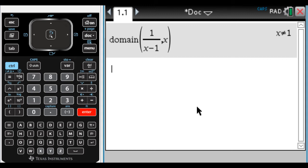What it does is it tells you what is not in the domain in this particular case. So the domain is all reals except for 1. So it did a good job with that.